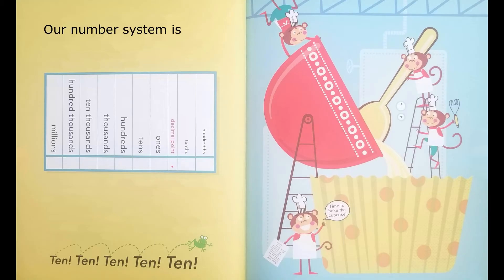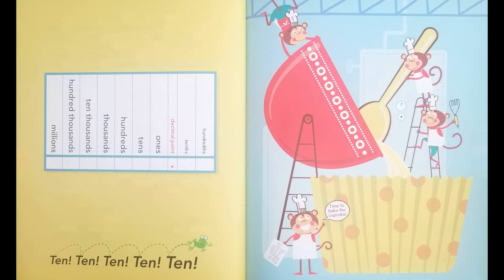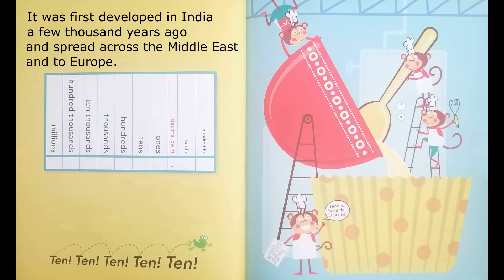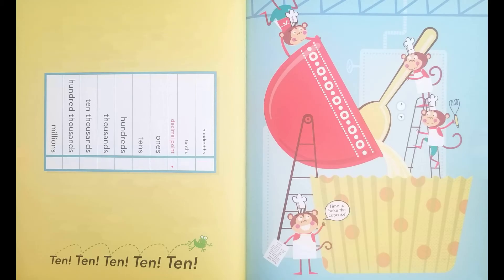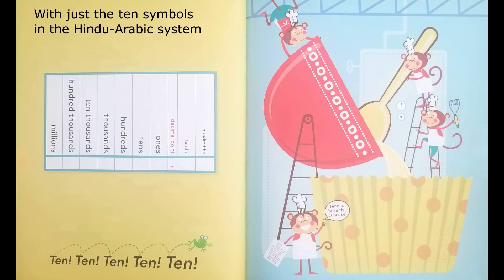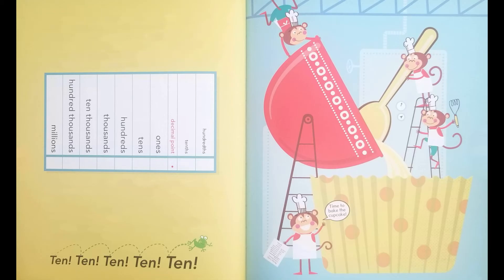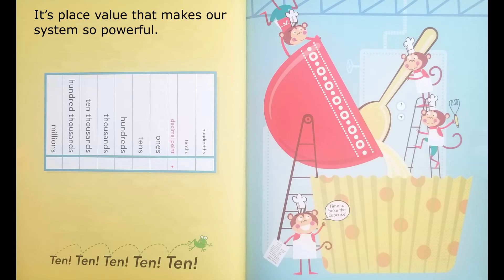Our number system is called the Hindu-Arabic system. It was first developed in India a few thousand years ago and spread across the Middle East and to Europe. With just ten symbols in the Hindu-Arabic system, we can write any number, no matter how large or how small. It's place value that makes our system so powerful.